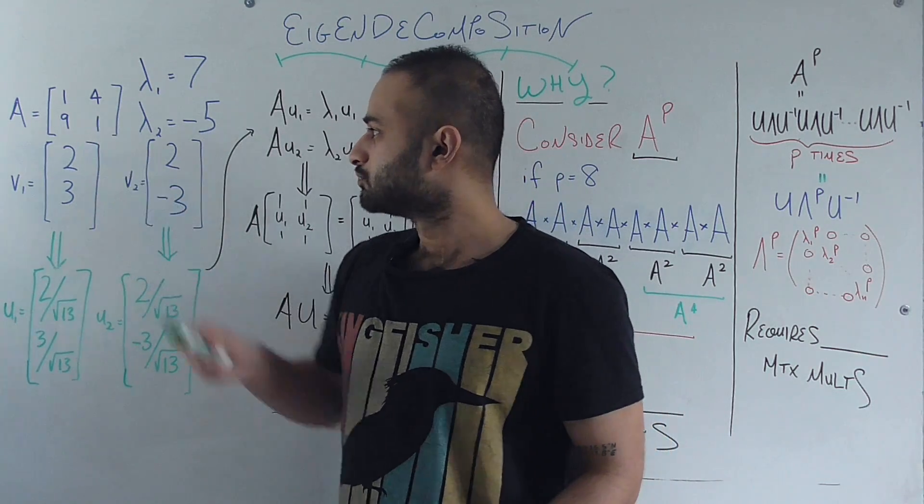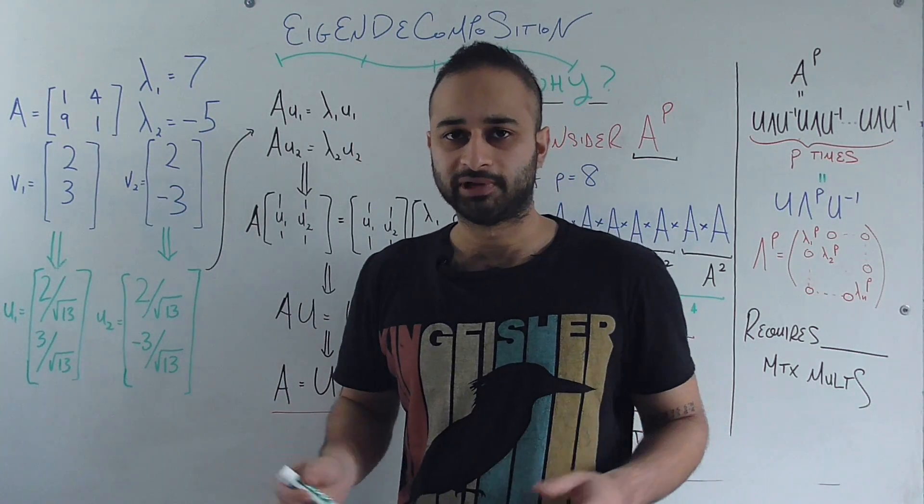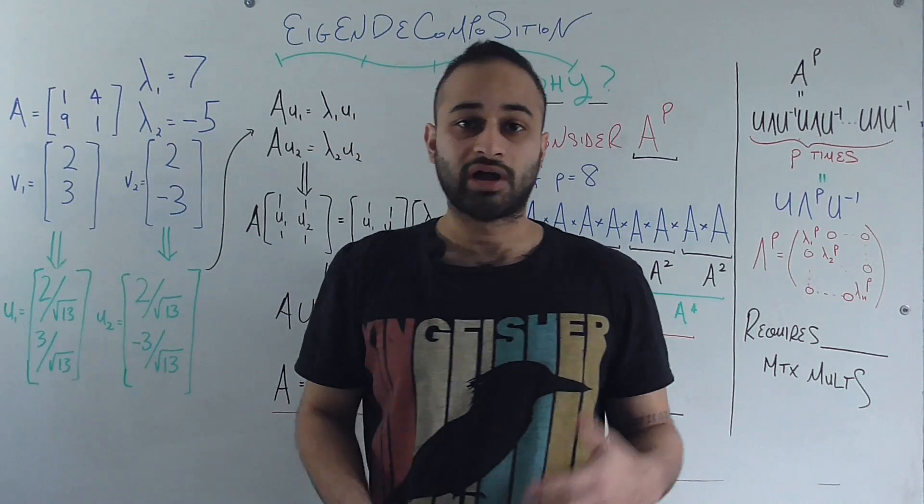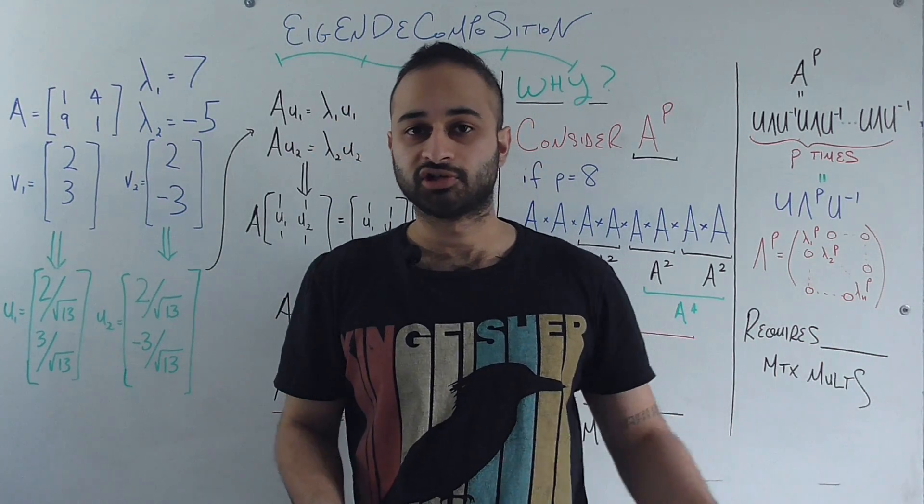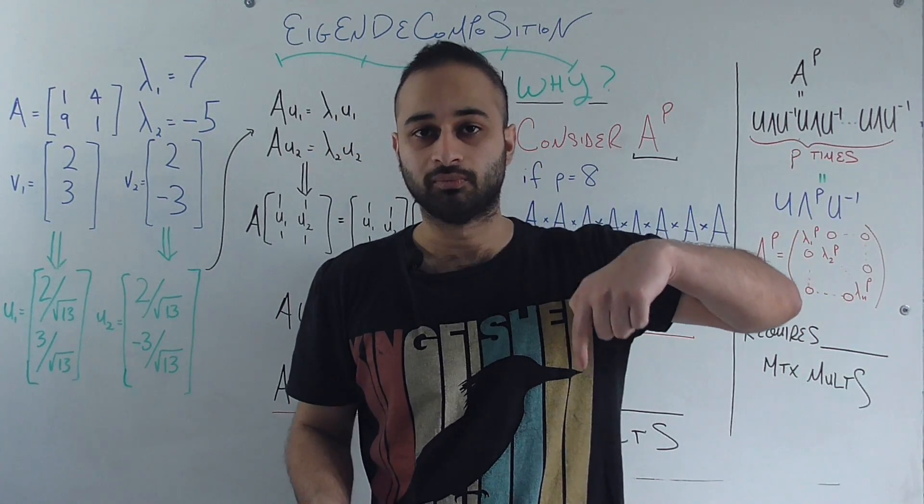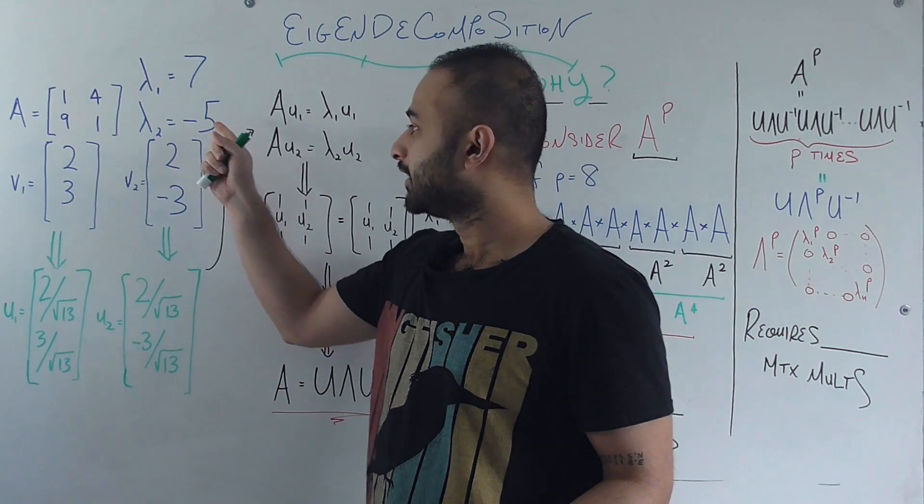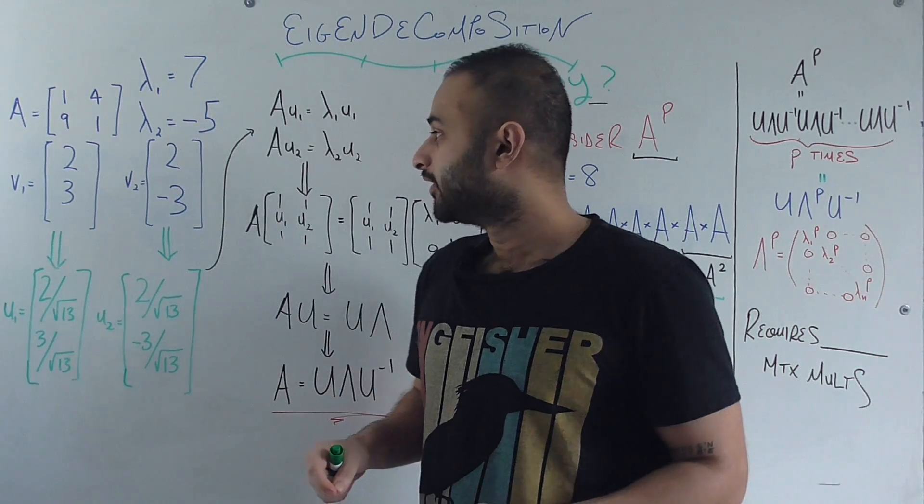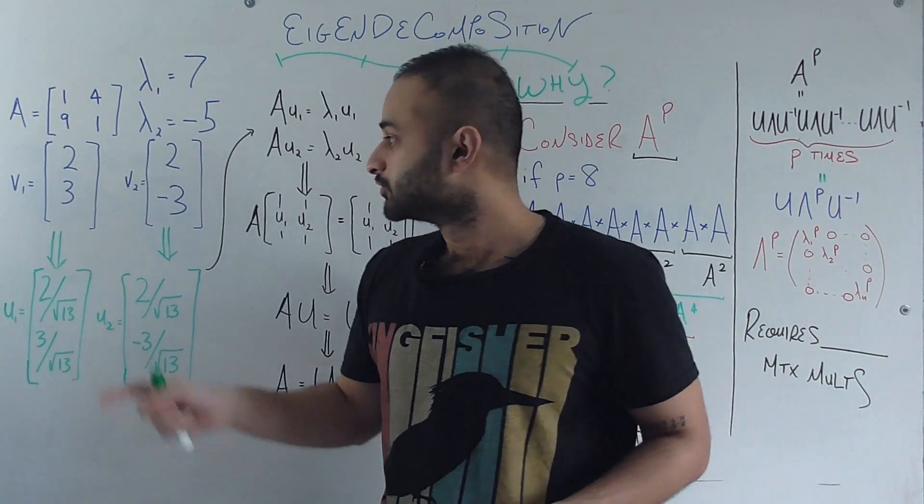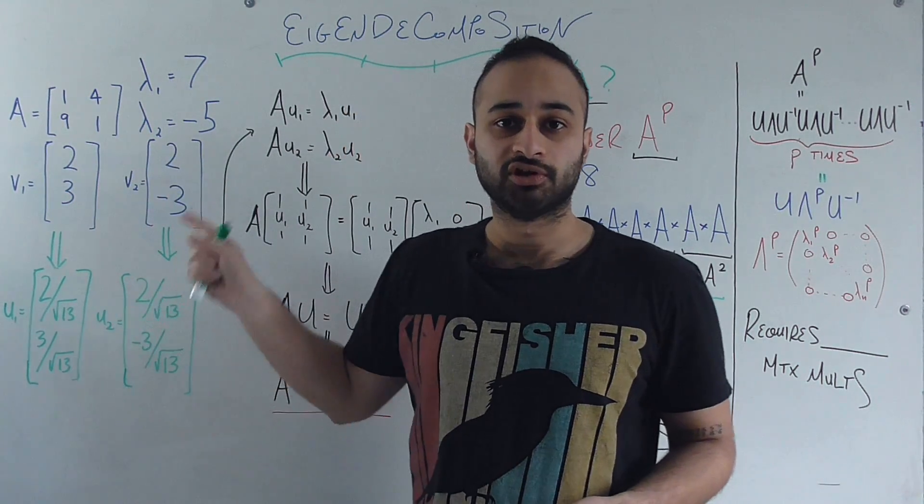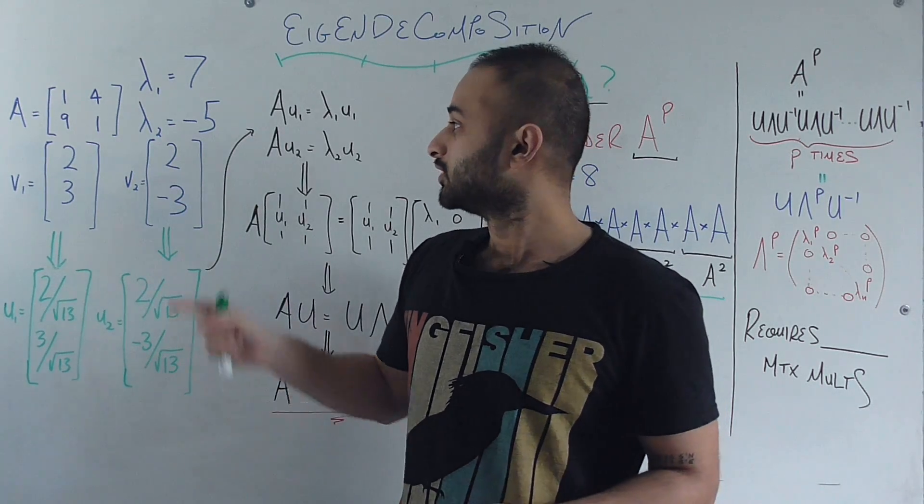Let's say we're working with this very small 2 by 2 matrix just for the beginning of this video. So it's 1, 4, 9 and 1. I have a whole separate video on eigenvectors and eigenvalues which I'll link in the description below. But basically we can get the eigenvalues as 7 and negative 5. And then we can get the eigenvectors as 2 and 3. So this eigenvector matches up to the 7. And then 2 and negative 3 which matches up to the negative 5.